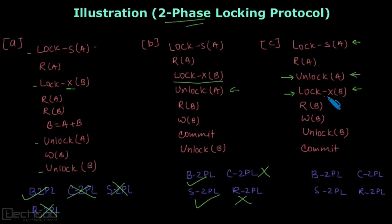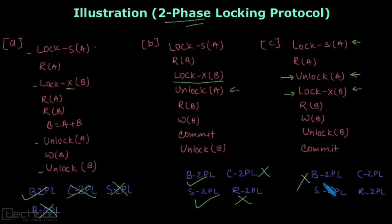So transaction C is violating the two-phase locking condition — it is not even basic 2PL. Therefore, no conservative 2PL, no strict, and no rigorous either.